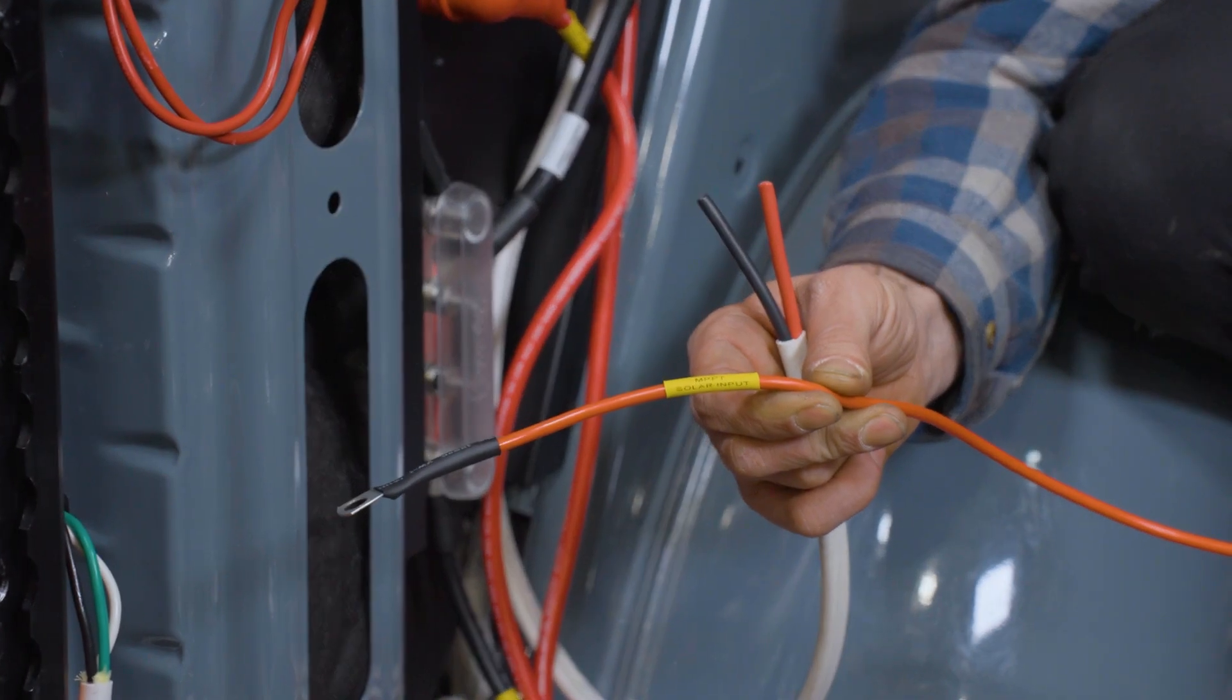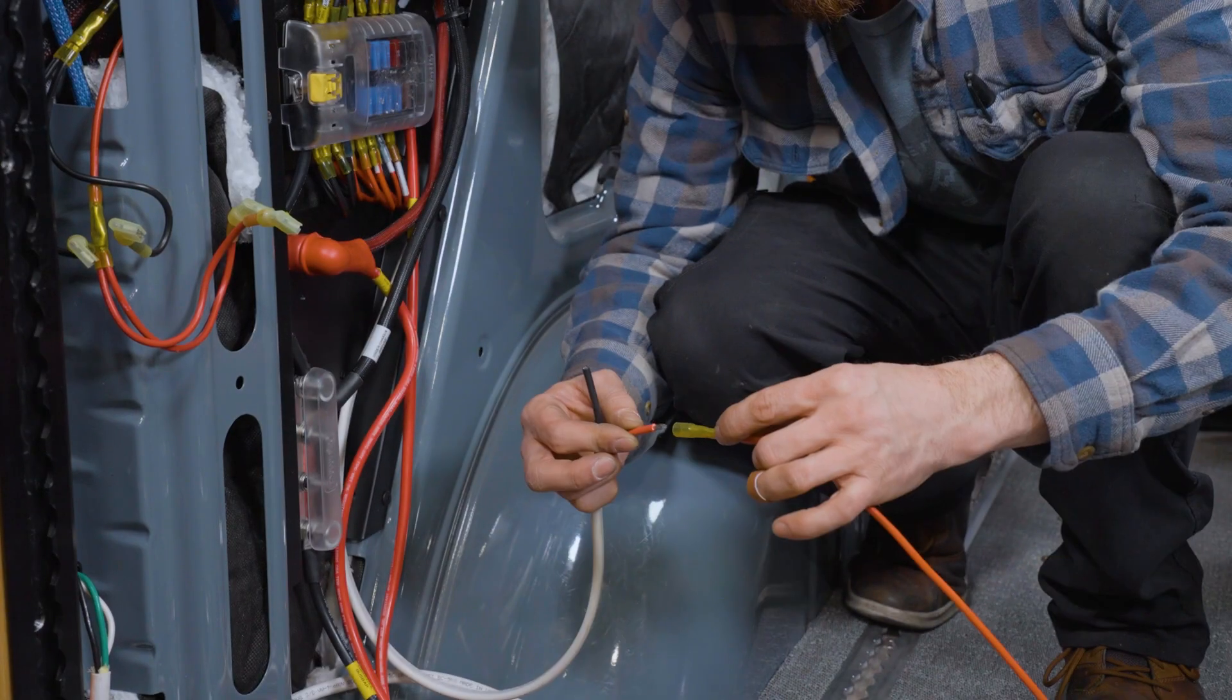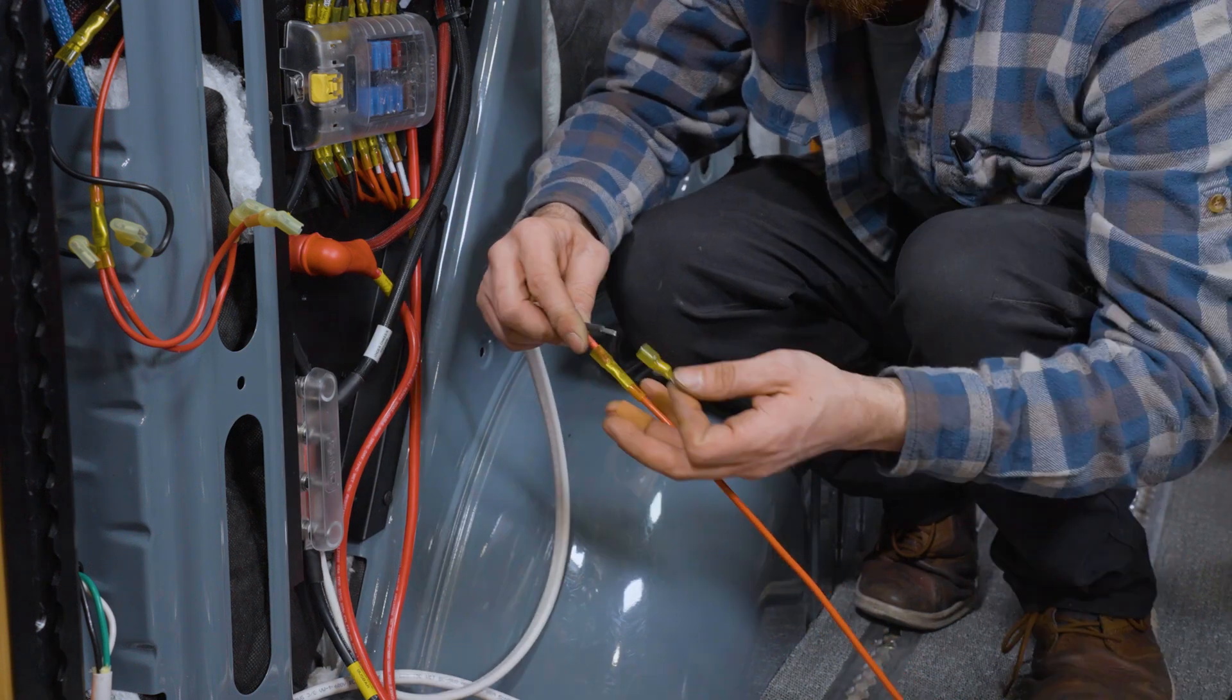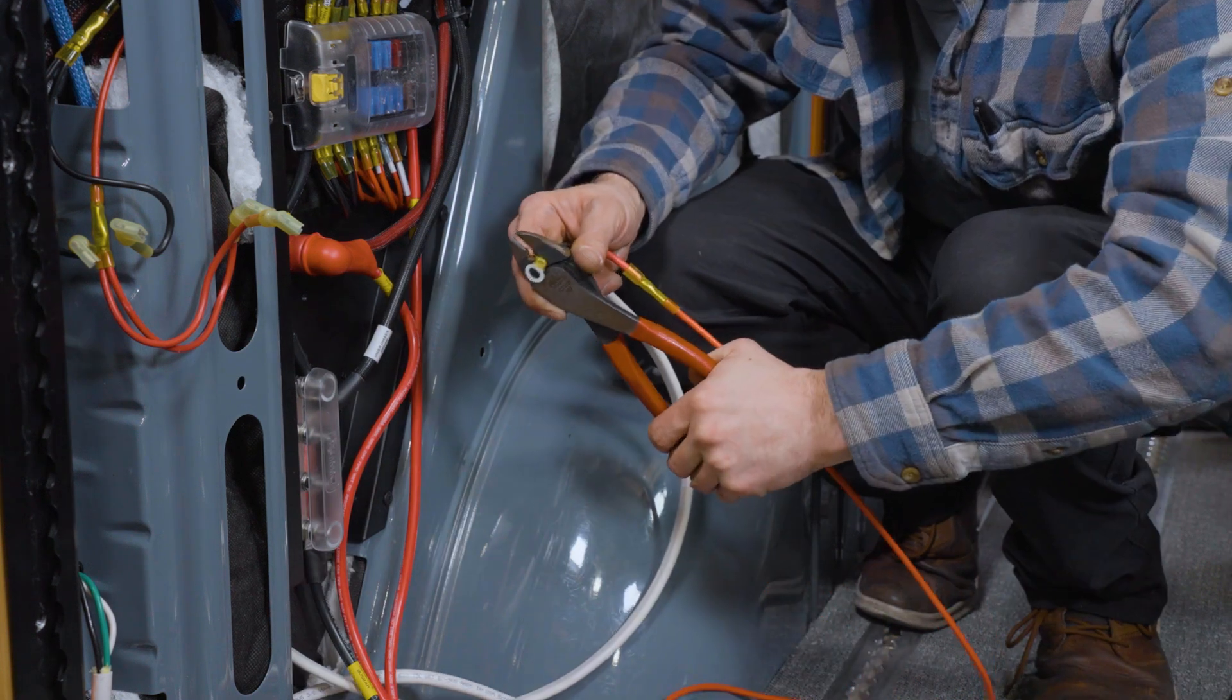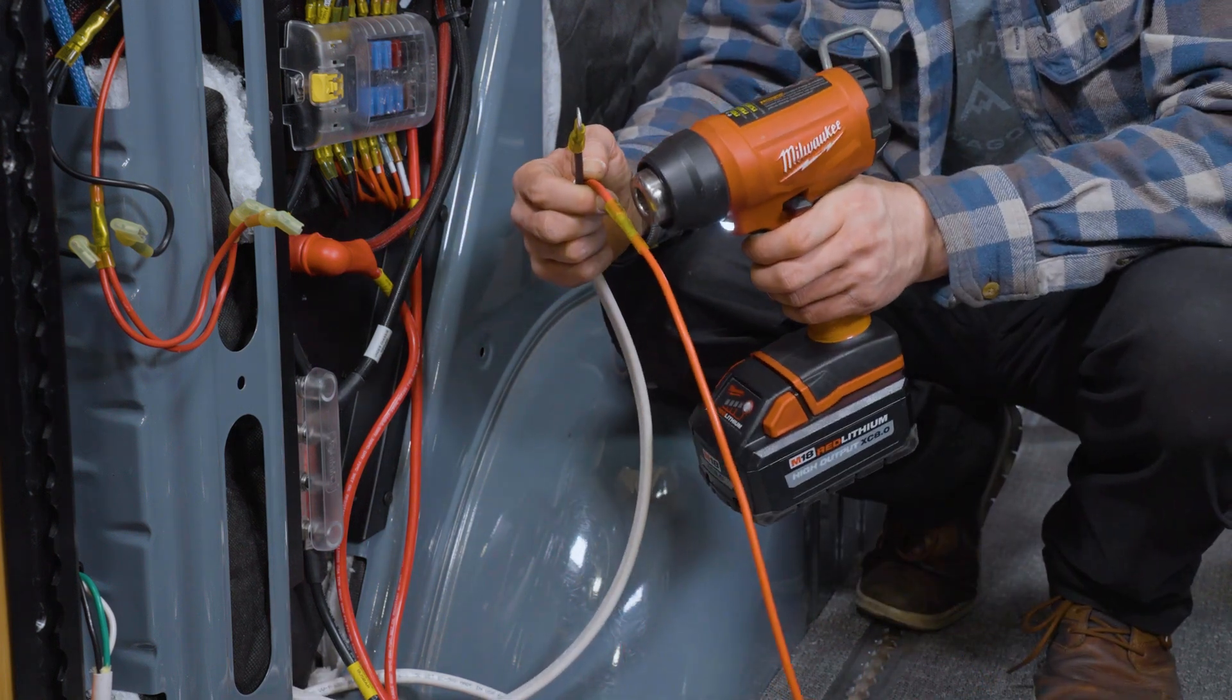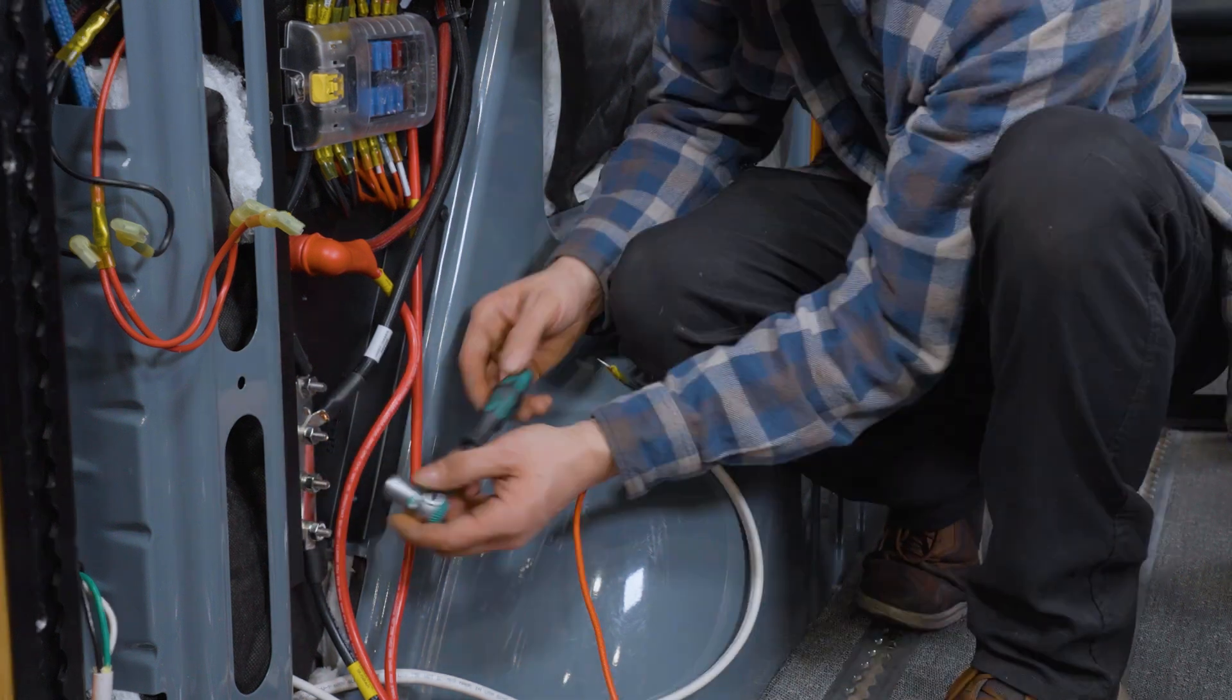Now we're ready to make our final connections at the back of the van. So we're just taking our red positive extension cable with the ring terminal that should say positive solar MPPT input, and we're butt connecting that to the red cable coming out of the wall. And the negative cable coming out of the wall is going to get that ring terminal attached to it.